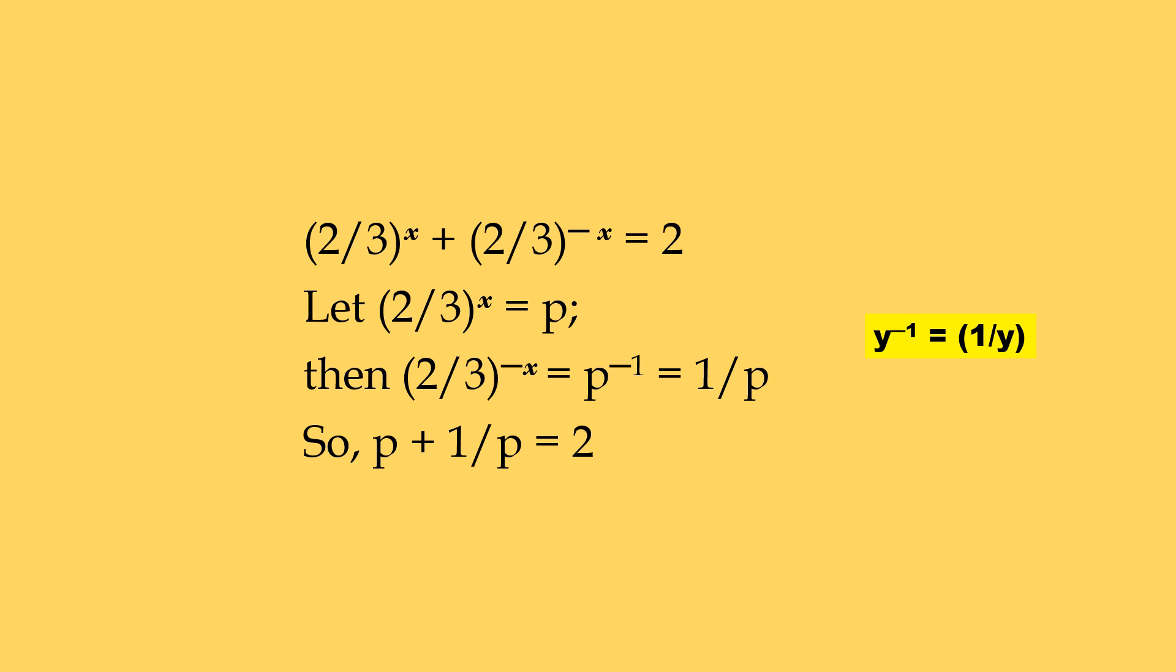Suppose 2 by 3 to power x is equal to p, then 2 by 3 to power minus x would be equal to p power minus 1. Also, p power minus 1 may be written as 1 by p. Thus we get p plus 1 by p equal to 2.